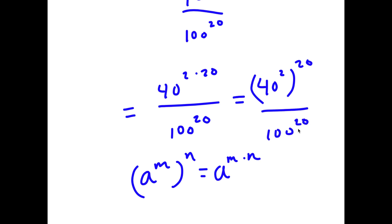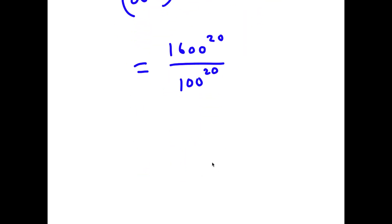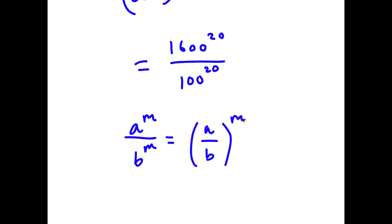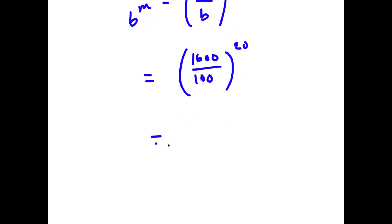Now I have this over 100 to the power of 20, and 40 to the power of 2 is 1600. So now I have 1600 to the power of 20 over 100 to the power of 20. Since a to the power of m over b to the power of m equals a over b to the power of m, this becomes 1600 over 100 to the power of 20. And 1600 over 100 is 16, so I have 16 to the power of 20.